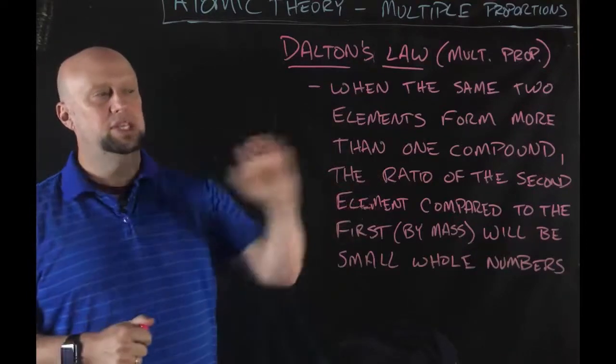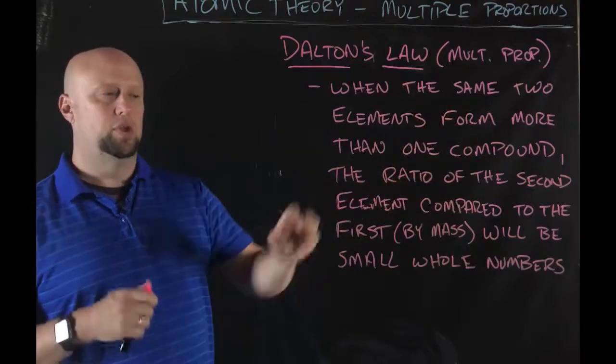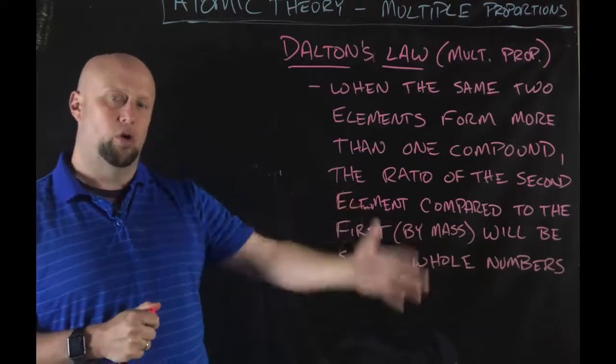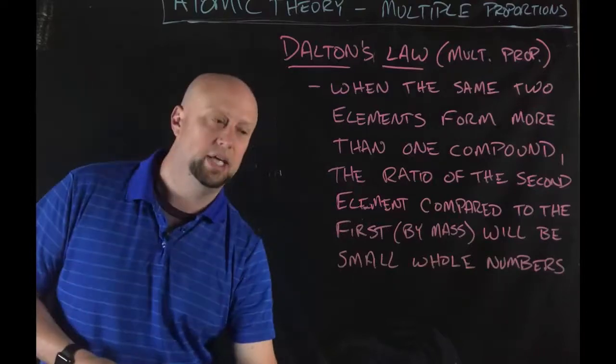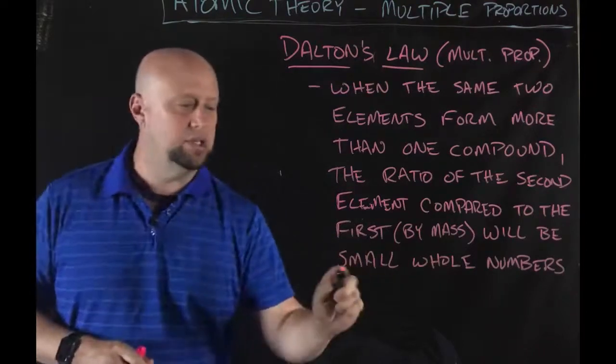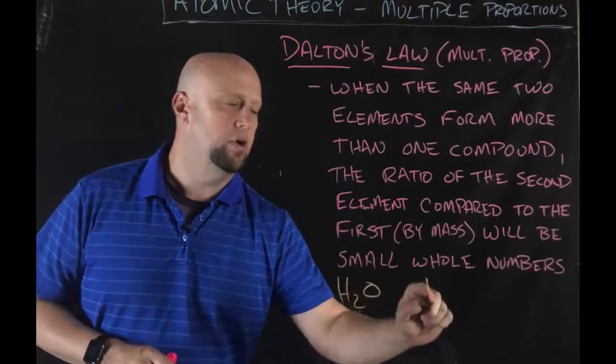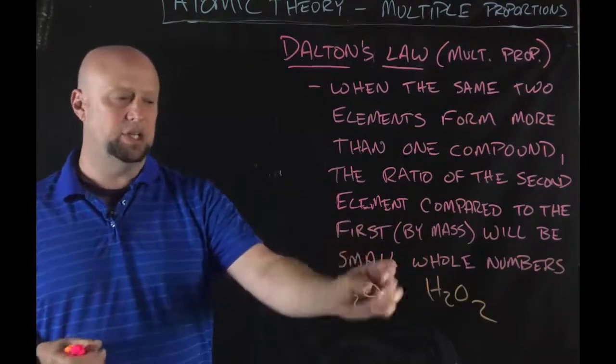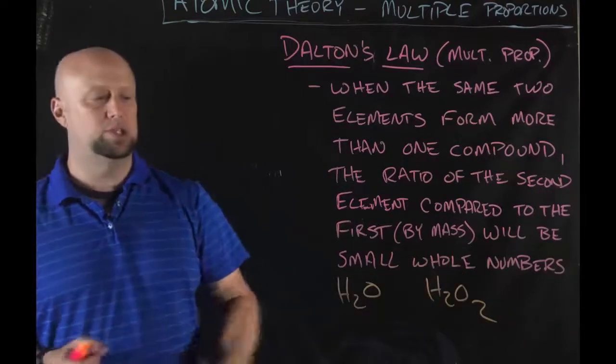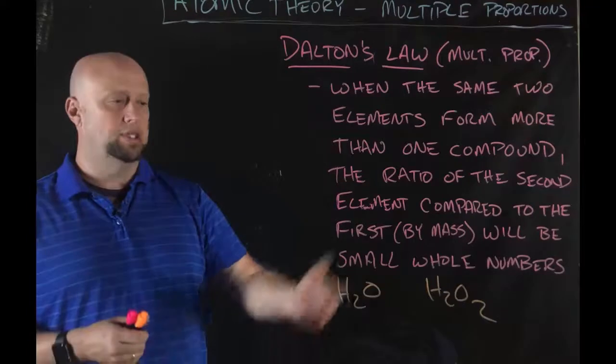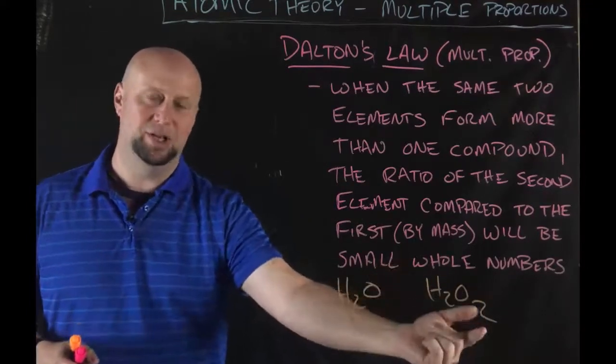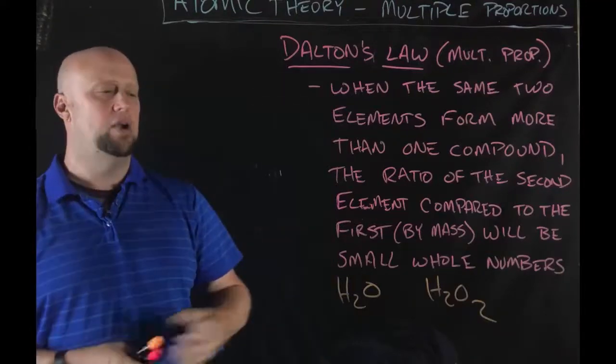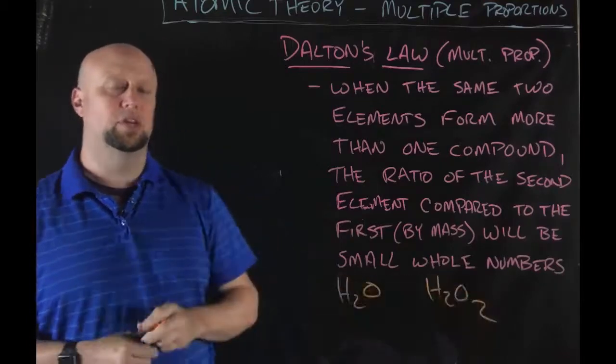When the same two elements form more than one compound, the ratio of the second element compared to the first one by mass is going to be in a ratio of small whole numbers. The easiest thing I always tell students to think about is H2O and H2O2. What's the ratio? If we mass this out and essentially reduce the hydrogens down to one, what would be the ratio of the oxygens to each other? It would be one to two. It's 16 to 32 by mass, which of course is one to two, small whole numbers. And essentially it's going to be a way for us to reduce those masses down and be able to get us to the subscripts.